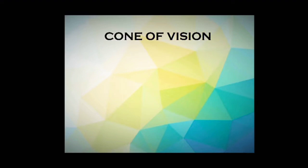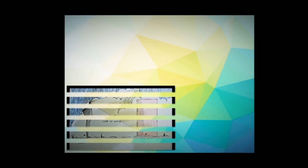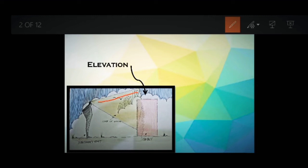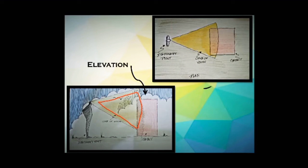Before drafting the perspective projection, we need to know what the cone of vision is. The cone of vision is the area or angle of sight. In the elevation figure, a man is standing and seeing an object — the field of sight in which he sees the object is conical in shape. The plan view also shows a conical-shaped sight.